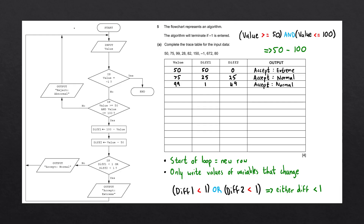Going back to the beginning, we input the next value, which is 28. 28 is not between 50 and 100, so we follow the no line and output 'reject: abnormal'.